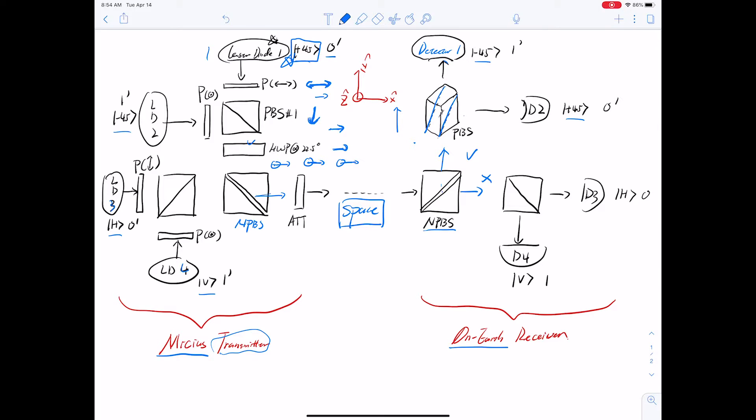If this photon reflects at the non-polarizing beam splitter, it will go through an attenuator and then travels into space. And then here on the receiver end, it has a 50% chance of going up or going to the right. If it goes up, it's in the correct plus and minus 45 degree basis. Suppose it goes up and then it will go through this polarizing beam splitter, which is rotated along the Z axis at 45 degree angle.